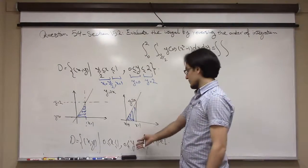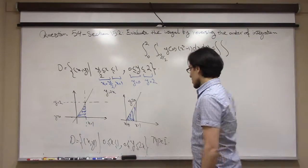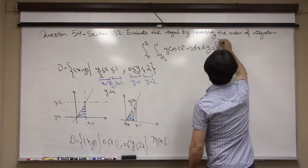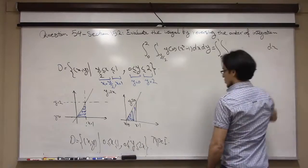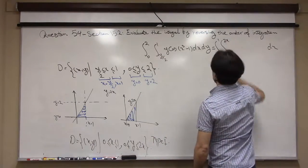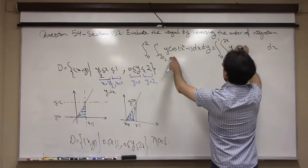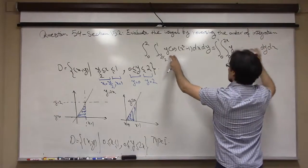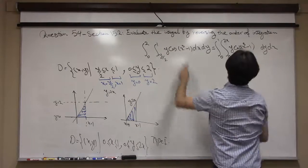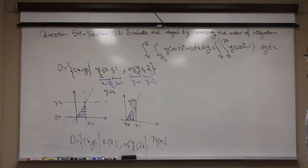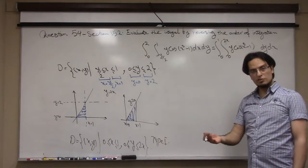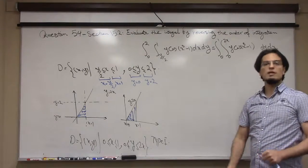Now I can rewrite my integral with the reversed order. x goes from 0 to 1 (that is dx), and y goes from 0 to 2x (that is dy), with the same integrand. Now I have an iterated integral to evaluate.